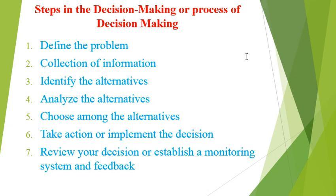The seventh step is to review the decision or establish a monitoring system and feedback. This is the last step in the decision making process. The leader or manager, having already taken the decision, will now analyze the results — whether it is a good one or a bad one. They will monitor it, establish an evaluation and monitoring system, get results, analyze them, and obtain feedback from the field. These results will help the manager or leader in future decision making.